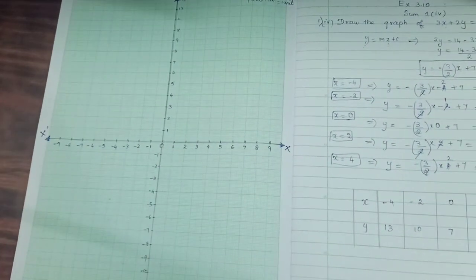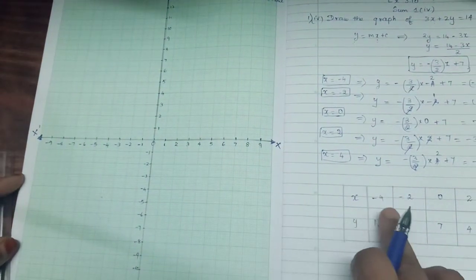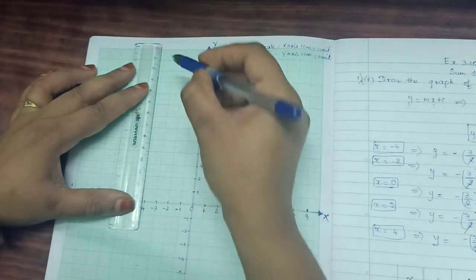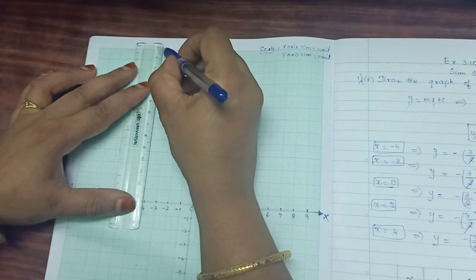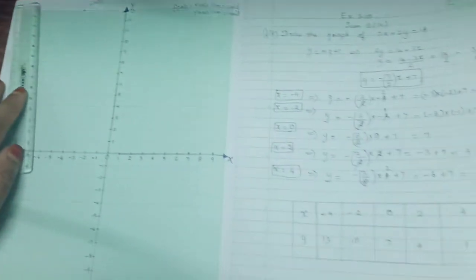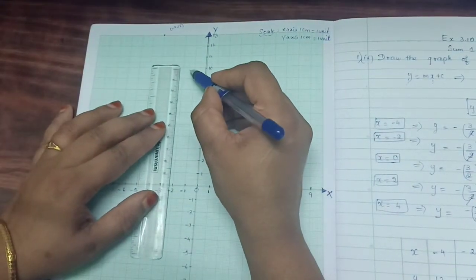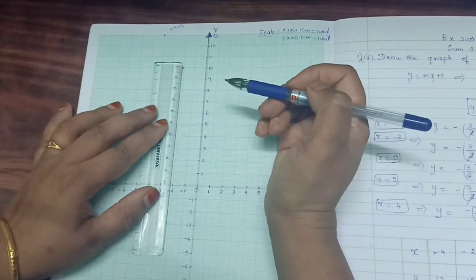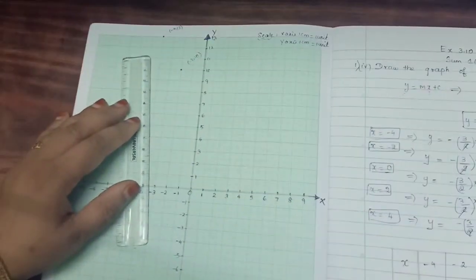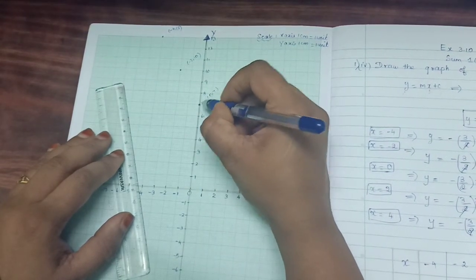Now we are going to mark the points. Minus 4, 13. Minus 4 means go here, minus 4. 13 is top here. Minus 4, 13, I marked it. Next is minus 2, 10. Minus 2, y value is 10. So here, minus 2, 10. Next value is 0, 7. 0 is here, no x value, only y value. So 0, 7 is this one.